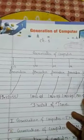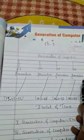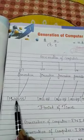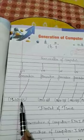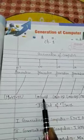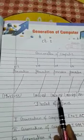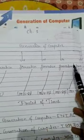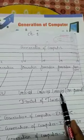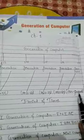The 1st generation computer was from 1942 to 1955. After that, the 2nd generation computer was 1955 to 1964. Then the 3rd generation computer was 1964 to 1975, and the 4th generation computer was 1975 to 1989.